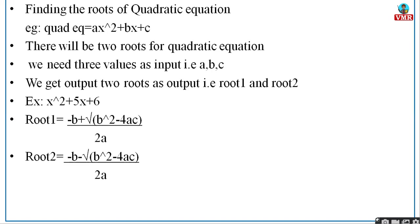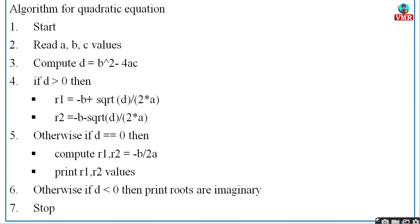Consider the algorithm for solving a quadratic equation. The first step should always start with 'Start' and always end with 'Stop'. In between, you write all the logic, the initializations, and the conditions. The first step is Start, then you read a, b, and c values from the user, and then you compute d = b² − 4ac.